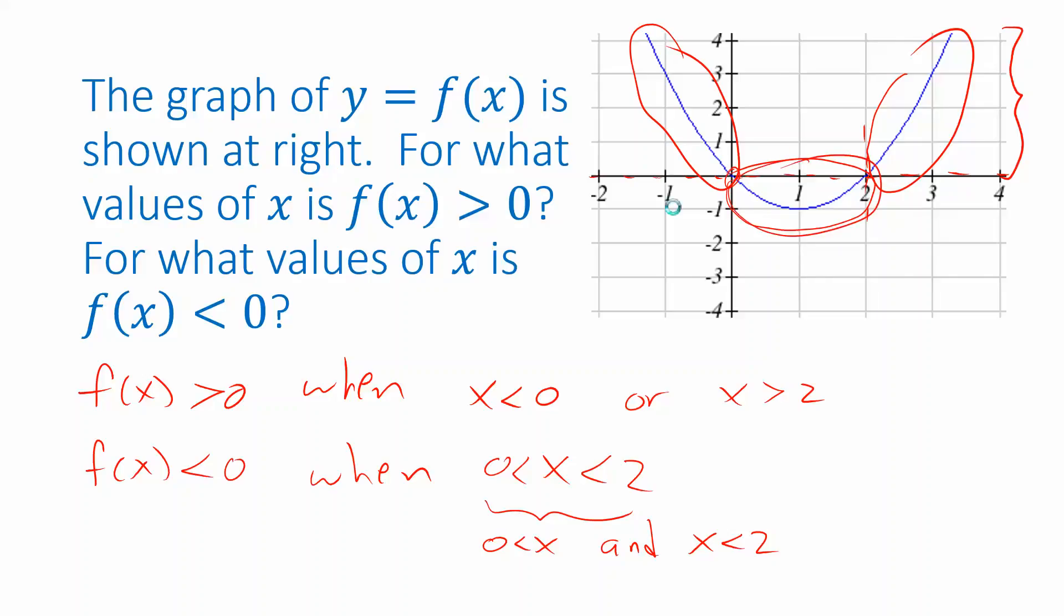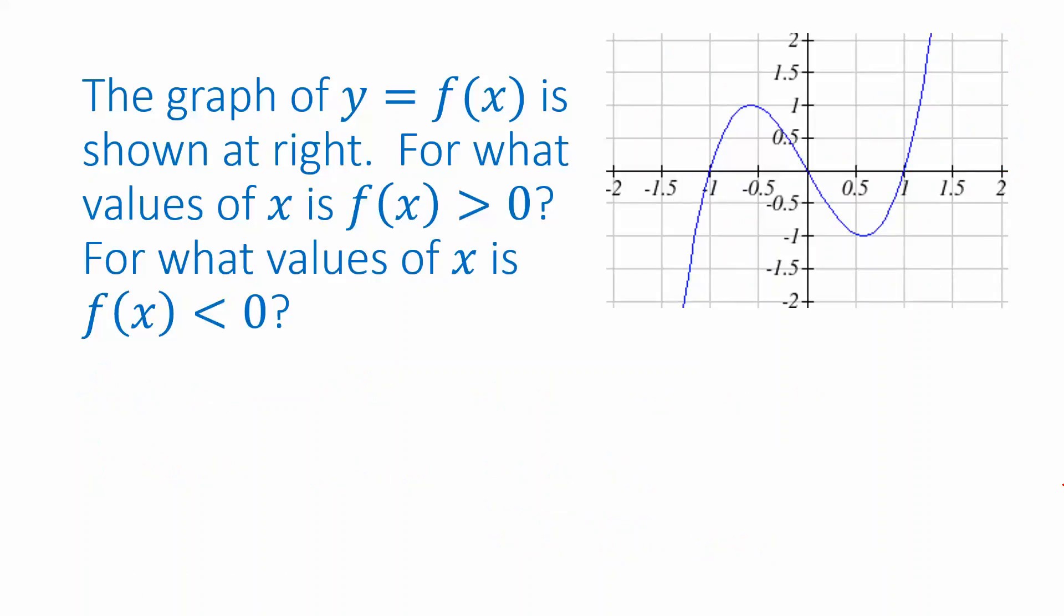Let's do one more example like this. When is this function positive? So that's going to be everywhere in this interval, which appears to be from negative 1 to 0. f of x is positive when x is between negative 1 and 0, as well as this piece of the graph, which is when x is greater than 1.